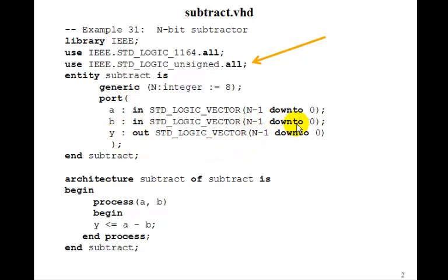b n-1 down to 0 will be what we're subtracting, and then the difference y will be n-1 down to 0. So then in this process a, b, all we have to say is y gets a minus b. So that's pretty simple, just like we had for an adder.